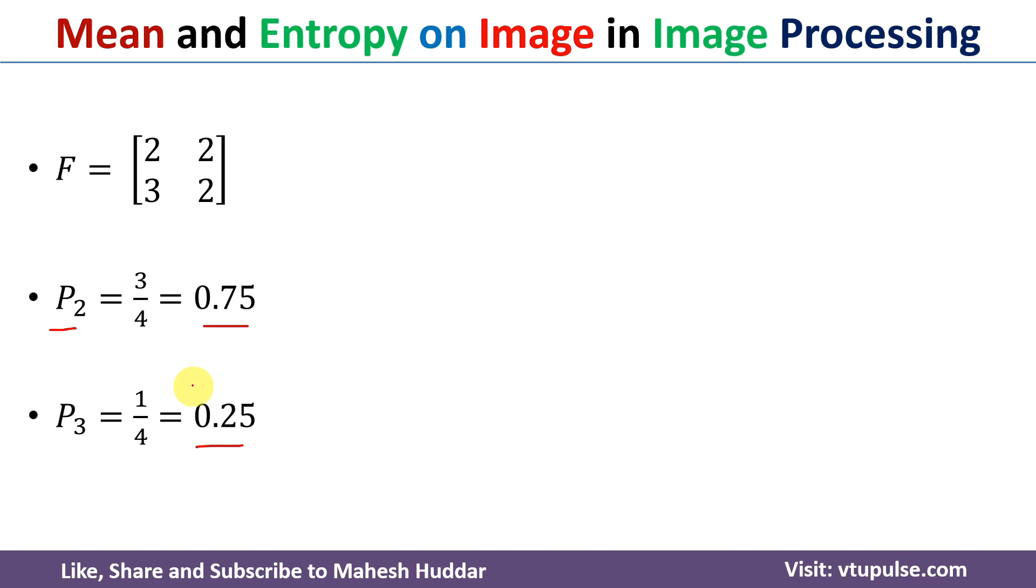Now, once you calculate the probabilities, the next step is to calculate the mean. Mean calculation is quite straightforward. We need to add all the pixel values divided by the number of pixels.